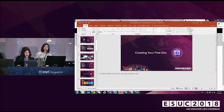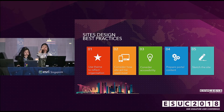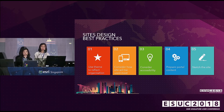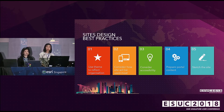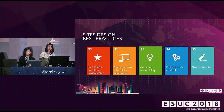Here are the best practices for site design. Number one: always use a theme that reflects your organization — something your users are familiar with and can relate to. Number two: consider how the site will be used most — our site is responsive, so consider how it will display on mobile devices. Consider accessibility and make your site as readable as possible; avoid white text on a white background. Prepare your portal content — summaries, thumbnails, and text — as these are important. And lastly, sketch your site so you have a rough idea of how it will look.